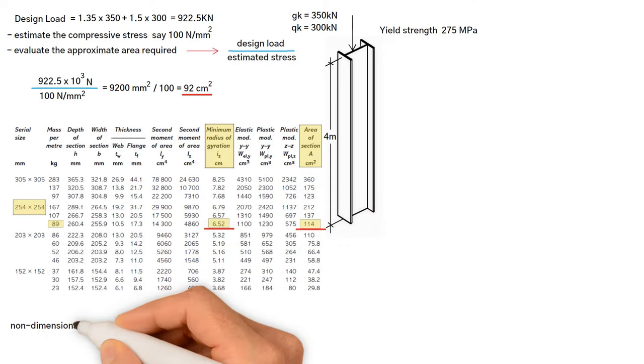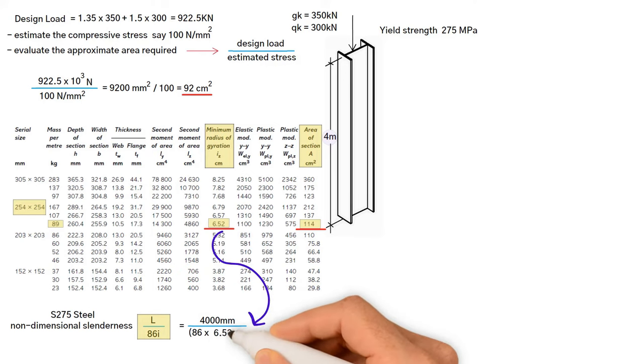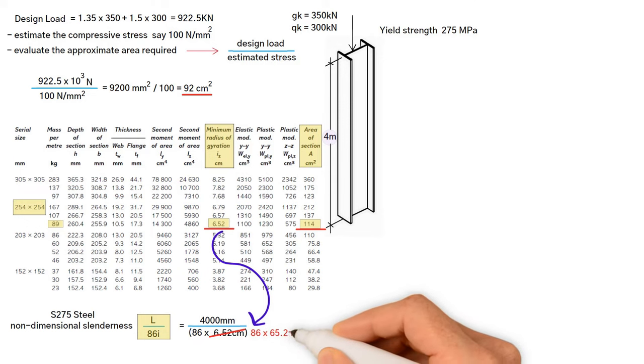To evaluate the non-dimensional slenderness, we need to use the following equation. Therefore, slenderness ratio equals 4000 millimetres divided by open bracket 86 times 6.52 centimetres, close bracket. Let's convert 6.52 centimetres to millimetre. So, it would be 86 times 65.2. Our result is 0.713.